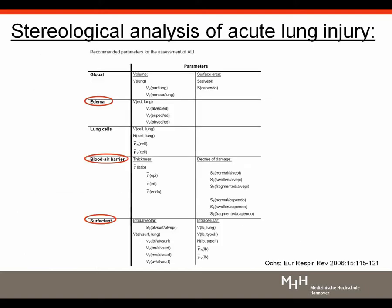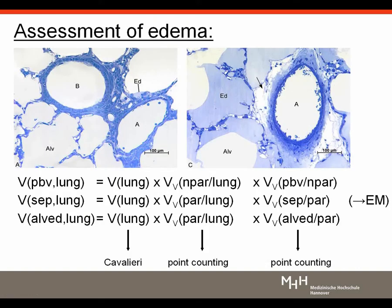Here is a list of useful parameters for assessing acute lung injury: to assess edema — its total volume and volume in different sub-compartments — for assessing the blood-air barrier including its thickness and degree of damage, and for assessing intra-alveolar and intracellular surfactant compartments. Stereology can distinguish between different compartments: the peribronchovascular compartment, the alveolar septal compartment, and the intra-alveolar compartment. So we learn not only about the total amount of edema fluid but also about its distribution across compartments, assessed by simple point counting.